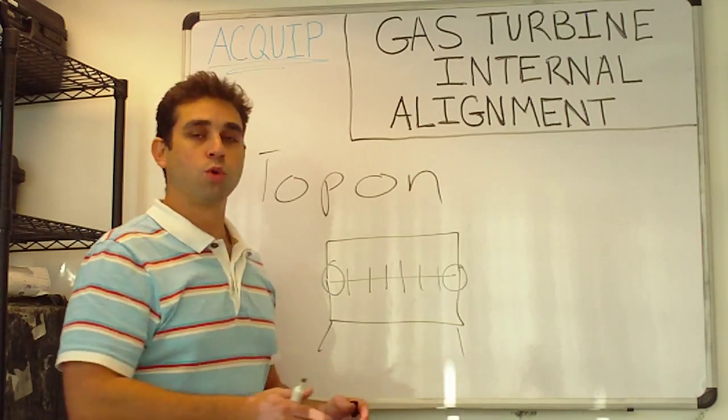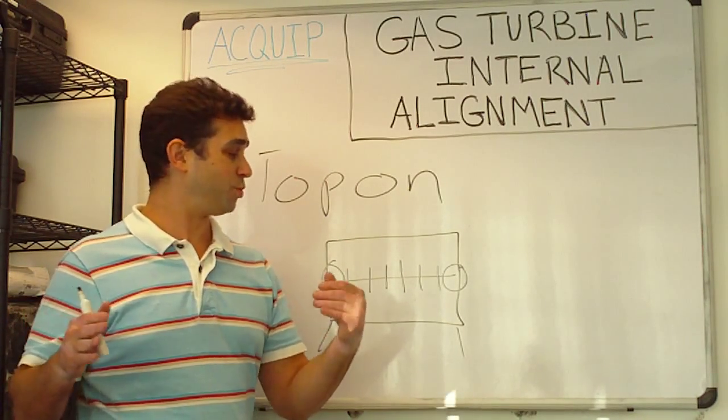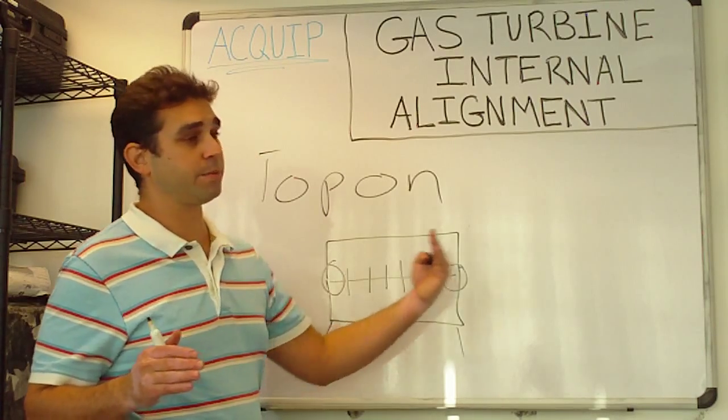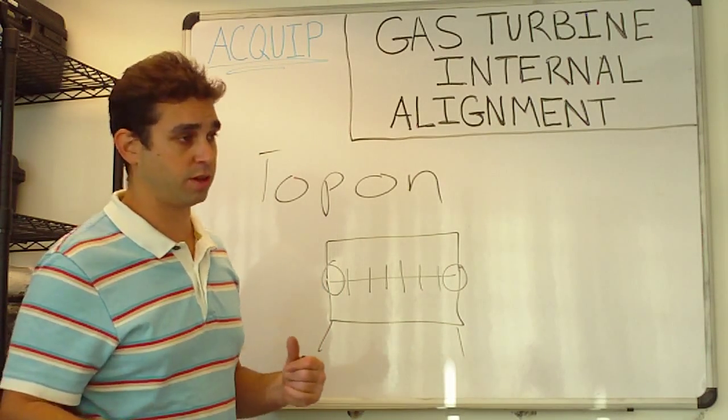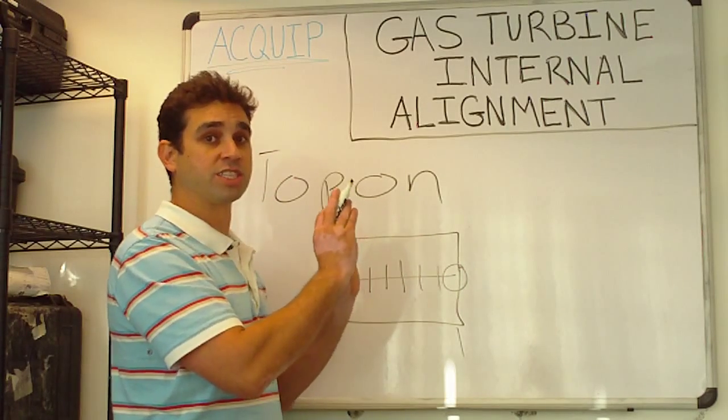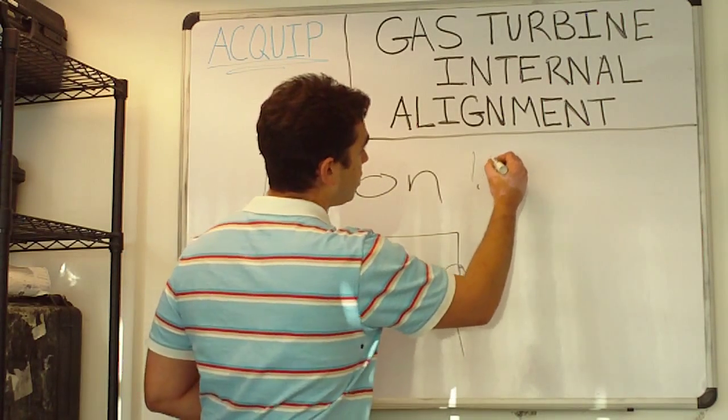Once we have that what we want to do is our internal alignment the same as we would any other type of internal alignment. And that's using our same procedure of first dimensions.